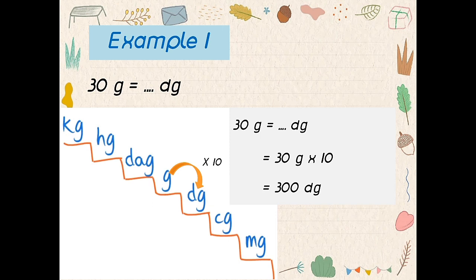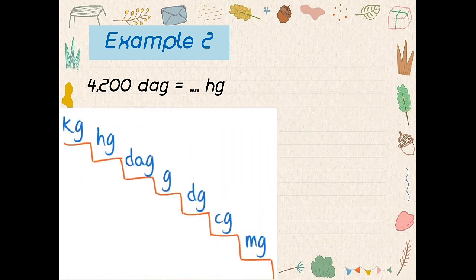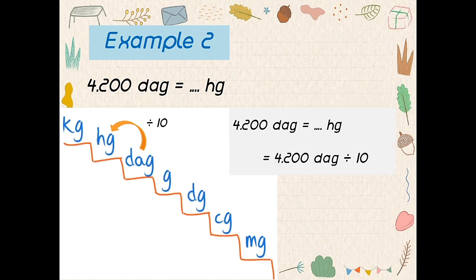Next, example number two: 4200 dekagram, how many hectogram? From dekagram to hectogram — up or down? Good, up. How many? Just one. So, divide by 10. 4200 dekagram divided by 10 is — so the answer? 420 hectogram.